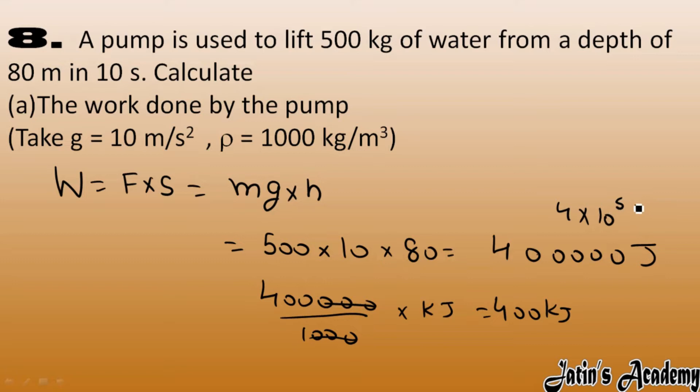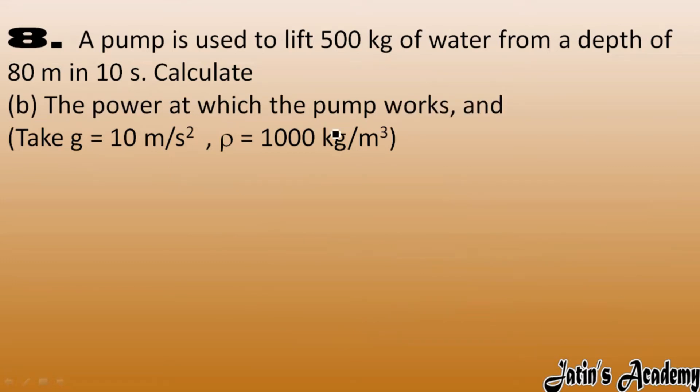In any way you can write the answer. Next we have the power at which pump works. Power is work done per unit time. Work done we have 4 into 10 raise to power 5 and time we have 10 seconds, so this one 10 is cut with this, so it becomes 4 into 10 raise to power 4 watt. You can also write 40 into 10 raise to power 3 watt, so 40 kilowatt is the power.